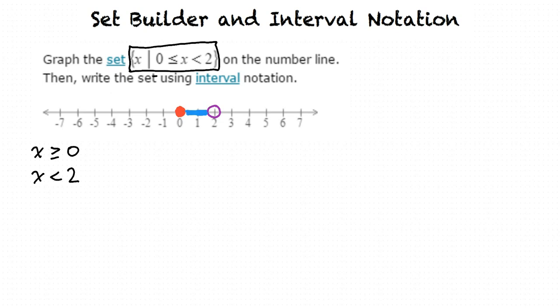How do I write this all in interval notation? Interval notation is how we write this inequality using only numerical values. We start with the smallest value and go to the largest value. We start with x equals 0 and write it in a bracket, showing that it is included. It goes from 0 to 2, so we write a comma after the 0, then a 2, and finish it off with a parenthesis to show that 2 is not included. So parenthesis means not included, and a bracket means it is included. Our final answer is [0, 2).